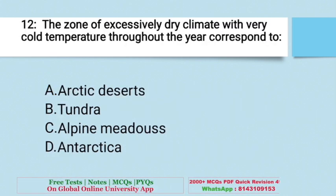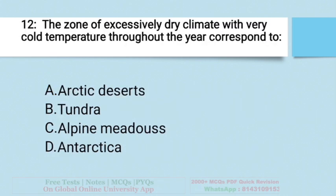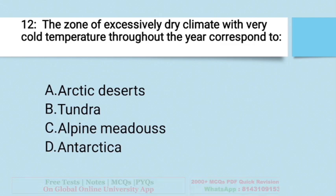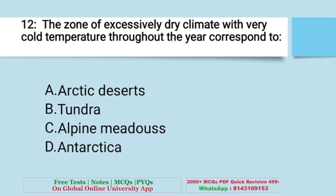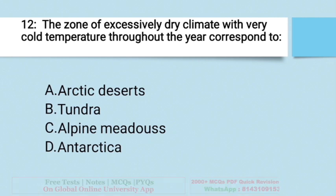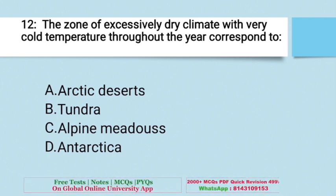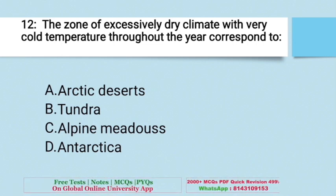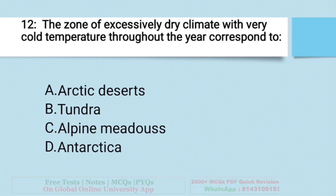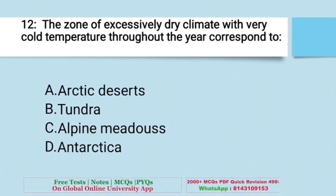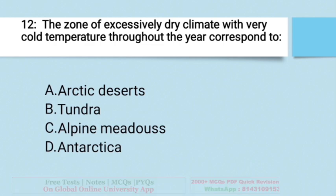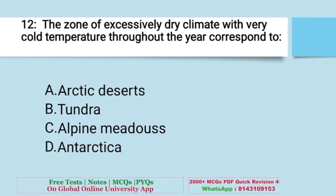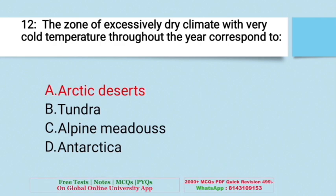Question: The zone of excessively dry climate with very cold temperature throughout the year corresponds to — A. Arctic deserts, B. Tundra, C. Alpine meadows, D. Antarctica. The right answer is Arctic deserts.